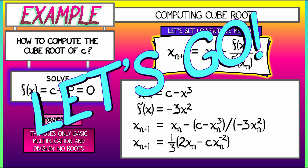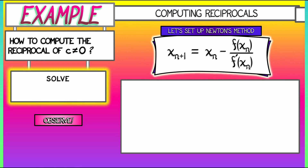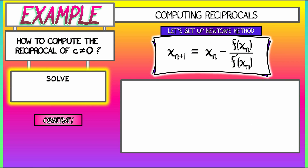That's how to use Newton's method to compute cube roots with just addition, subtraction, multiplication, and division. But what about division itself? That can be kind of difficult. Let's switch and use Newton's method to compute the reciprocal of a non-zero constant c. Think about something like 1 over pi—how do you compute that? You could do long division, but here's a way using Newton's method.